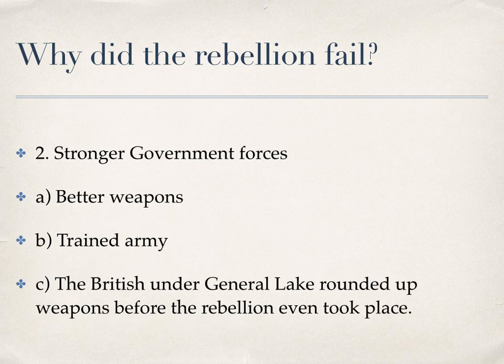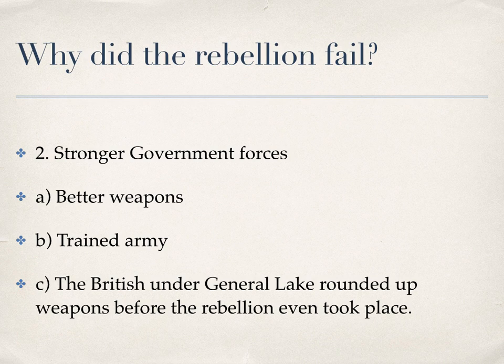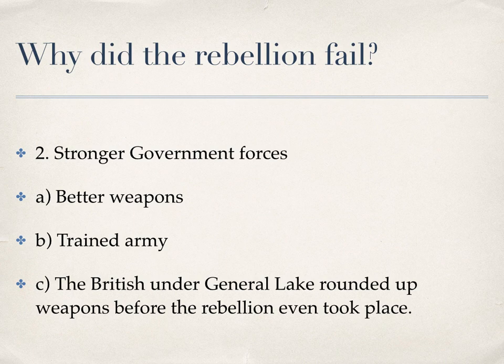The second reason the rebellion failed was that government forces were stronger — they had better weapons, a trained army, a part-time Yeomanry and a full-time militia. The men who fought for Ireland were not trained soldiers. Additionally, British General Lake had rounded up weapons before the rebellion even took place, going around confiscating any guns he could find because they had word of a planned rebellion. The main weapon of the 1798 rebellion was a pike — a long lance with a blade — and they were going up against muskets and cannons.